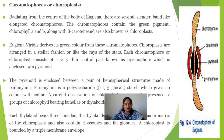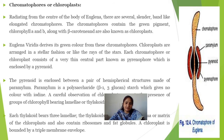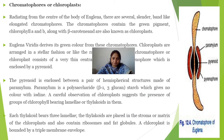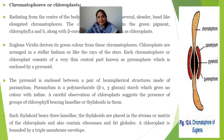Chromatophores or chloroplasts radiate from the center of the body in an elongated form. The chromatophore contains the green pigments chlorophyll A and B, along with beta-carotene, and is also known as chloroplast. Euglena derives its green color from these chromatophores. Chloroplasts are arranged in a stellar fashion, like the rays of a star. Each chloroplast consists of a very thin central part known as the pyrenoid.